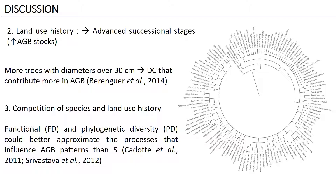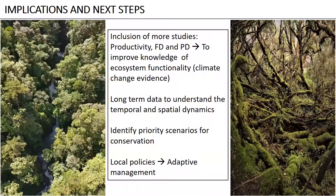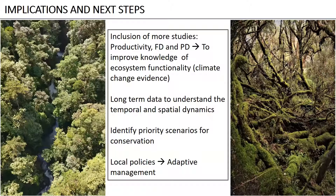For next steps, I think it is important to study in depth the productivity patterns along the gradient to complement the information I've presented. The inclusion of new metrics of diversity can help us improve our knowledge of ecosystem functionality, and this can provide evidence related to climate change.